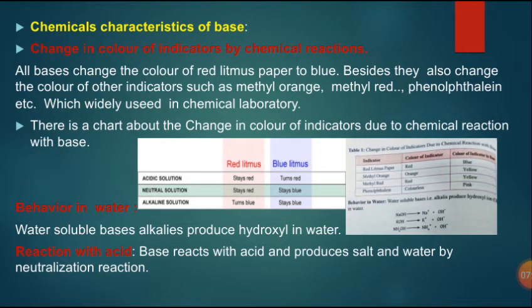Chemical characteristics of bases: change in color of indicators by chemical reactions. All bases change the color of red litmus paper to blue. They also change the color of other indicators such as methyl orange, methyl red, and phenolphthalein, which are widely used in chemical laboratories. The chart shows: red litmus paper turns blue in base; methyl orange (orange) turns yellow; methyl red (red) turns yellow; phenolphthalein (colorless) turns pink.